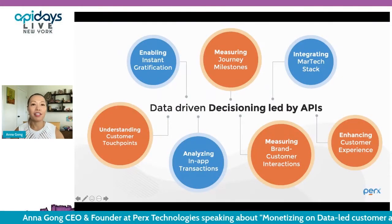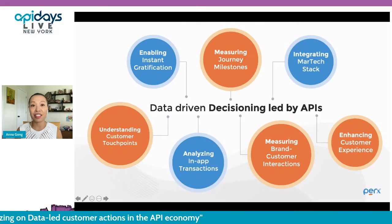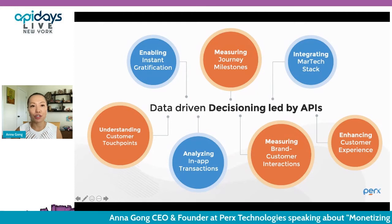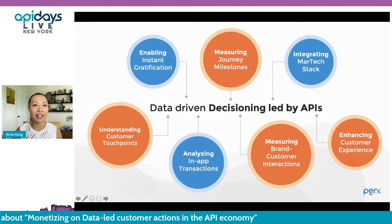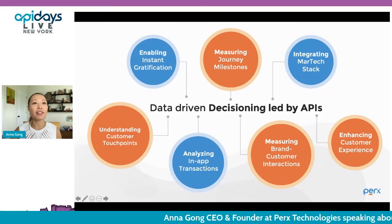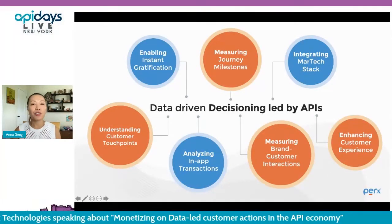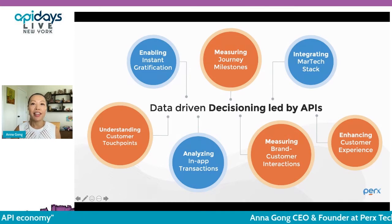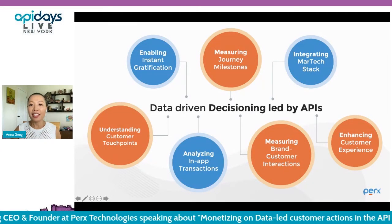In the API economy, a global consulting company's EVP of financial services told me today that North America is very behind in API adoption by large banking institutions. Asia is leading, with governments endorsing open banking APIs. Key problems: how do you enable instant gratification for digital natives? How do you measure customer journey milestones beyond click-through rates — tracking transactional and non-transactional behavior integrated with martech stacks like HubSpot and Salesforce?